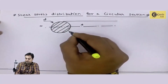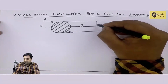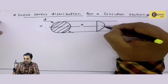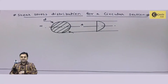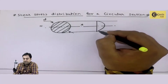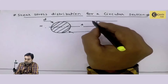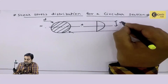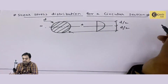The stress distribution is like this — it is again in the form of a parabola. Just as the stress distribution was for a rectangle, the same way would be the stress distribution for a circle also. This height is d by 2, and this is d by 2.